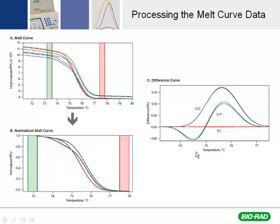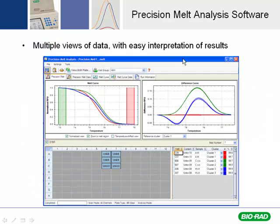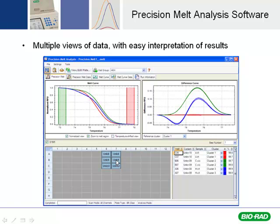The software does all this for you automatically. This is the software that Bio-Rad uses — it's called Precision Melt Analysis. It's very handy because it allows you to run the regular qPCR reaction with appropriate melt curve analysis settings in the protocol, then import the melt curve data into this software, which comes with CFX Manager. It's a seamless integration that does all the calculations and allows you to look at your clustering of different allelic variants.